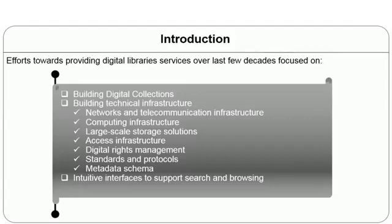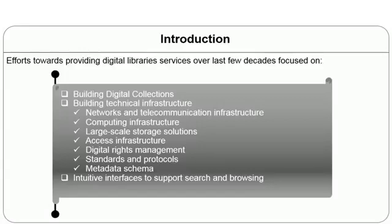The technical infrastructure includes networks and telecommunication infrastructure, computing infrastructure such as computers, printers, scanners, barcode scanners, electronic gates, and RFID equipment. It also includes large-scale storage solutions like hard disks and storage area networks, and access infrastructure for security purposes, such as electronic gates and biometric security devices.